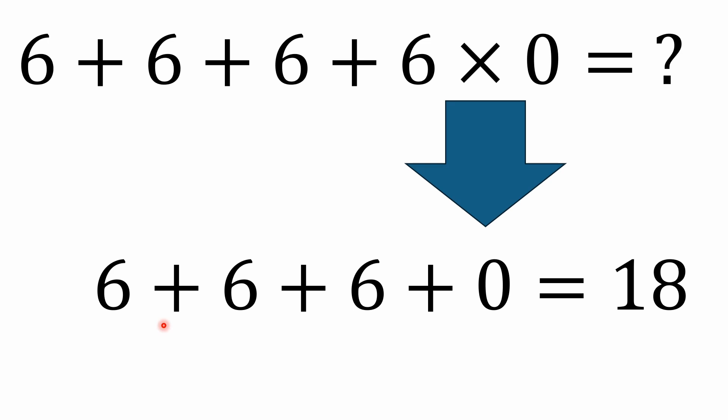Multiplication has precedence over addition. So six times zero is zero, which leaves you with six plus six plus six plus zero, which equals 18. What I see is a lot of people answering zero, because they think: add six plus six to get 12, add another six to get 18, add another six to get 24, and then 24 times zero is zero. That is incorrect.